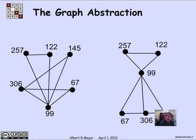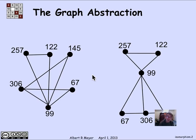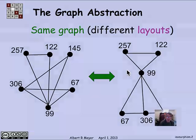This is an example of two different ways of drawing the same graph. Here's a vertex 257, and it's connected directly to 122, as shown here, and also 257 is connected to 99. If you check, it's exactly the same six vertices and exactly the same eight edges, but they're just drawn differently. So we don't want to confuse a drawing of a graph with the graph itself. The graph itself consists of just the set of nodes and the set of edges, and if you extracted that from these two diagrams, you would get the same set of nodes and the same set of edges — same graph, different layouts.